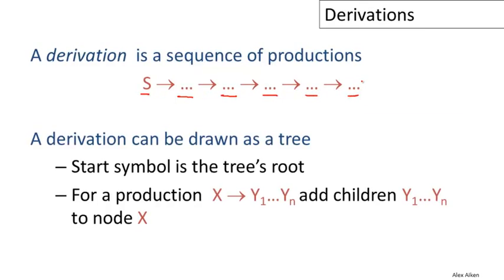A derivation can be drawn in a different way instead of as a linear sequence of replacements. We can draw it as a tree. For example, if I have a non-terminal X that appears in a derivation, then when I replace X, I can represent that by making the children of X the left-hand side of the rule that I use to replace X. So when I apply the production X goes to Y1 to Yn, I add Y1 to Yn as children of X in the tree that I'm building up.